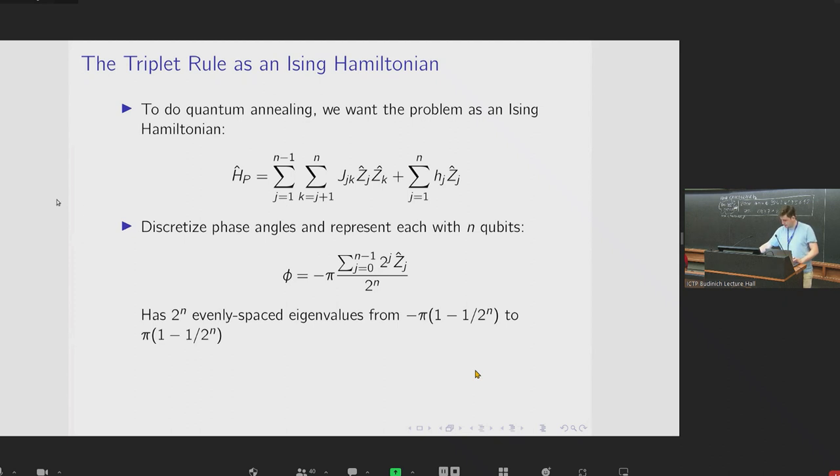Anyway, now that we have our variable encoding, we can get a quadratic Hamiltonian for each suitable triplet by simply adding the three variables in that triplet and squaring them. And then to get the full Hamiltonian, we can just sum those.